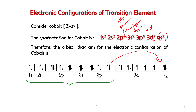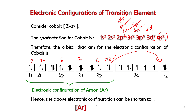The full configuration is 1s² 2s² 2p⁶ 3s² 3p⁶ 4s² 3d⁷ — that's 18 electrons up to 3p⁶, which is equivalent to the electronic configuration of argon, a noble gas. We can use the noble gas shorthand to write a shortened electronic configuration from 1s² up to 3p⁶ as [Ar].